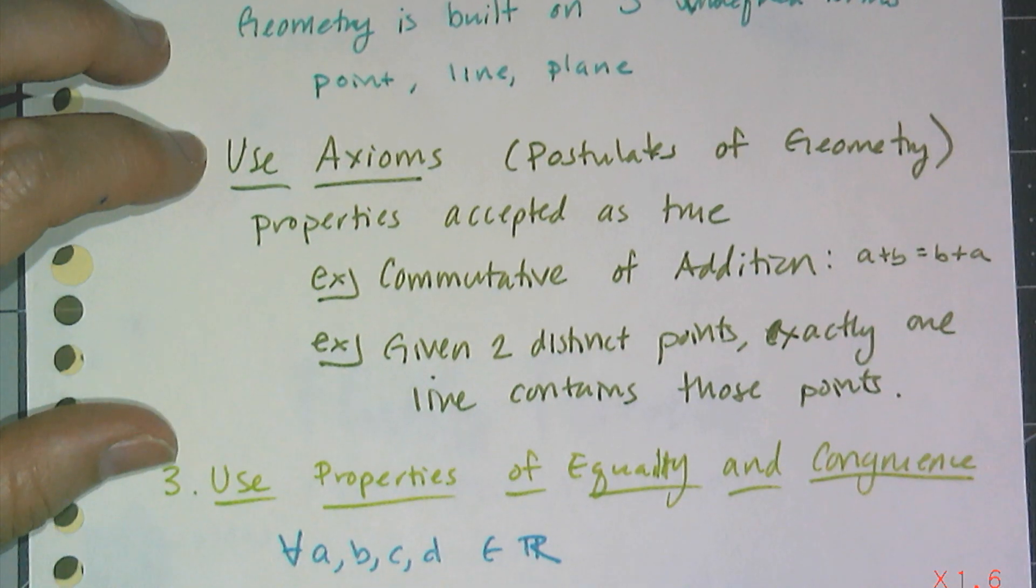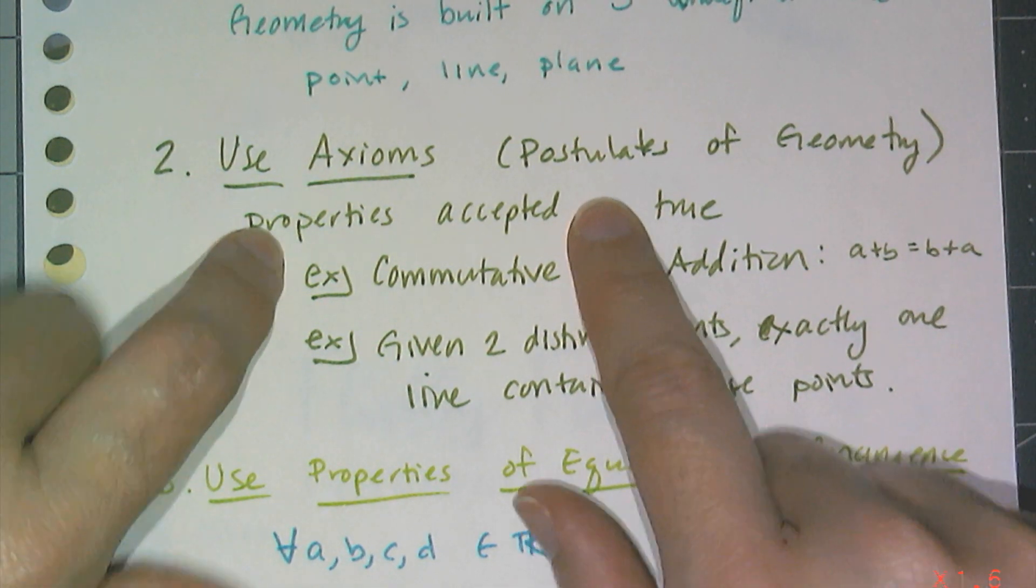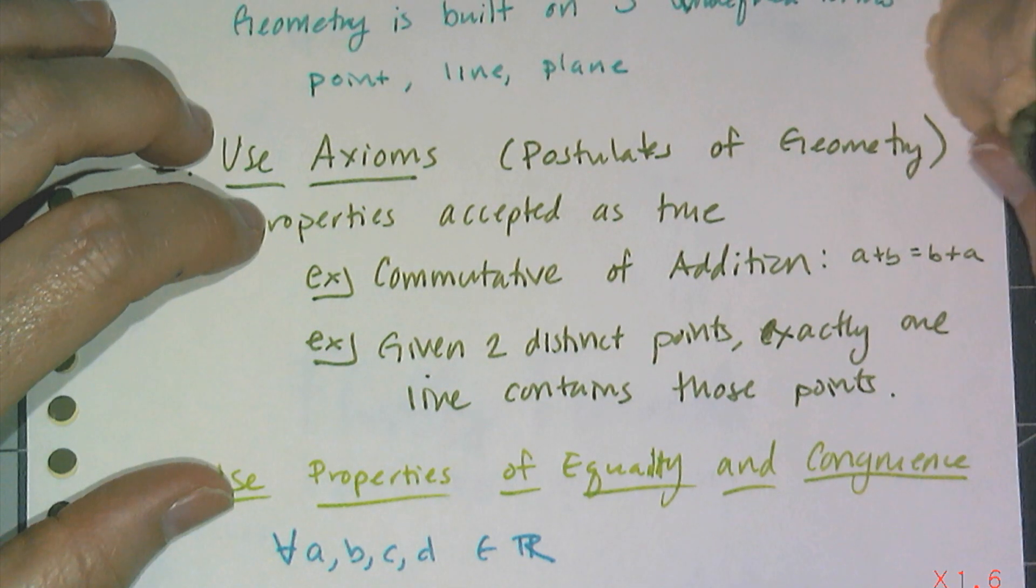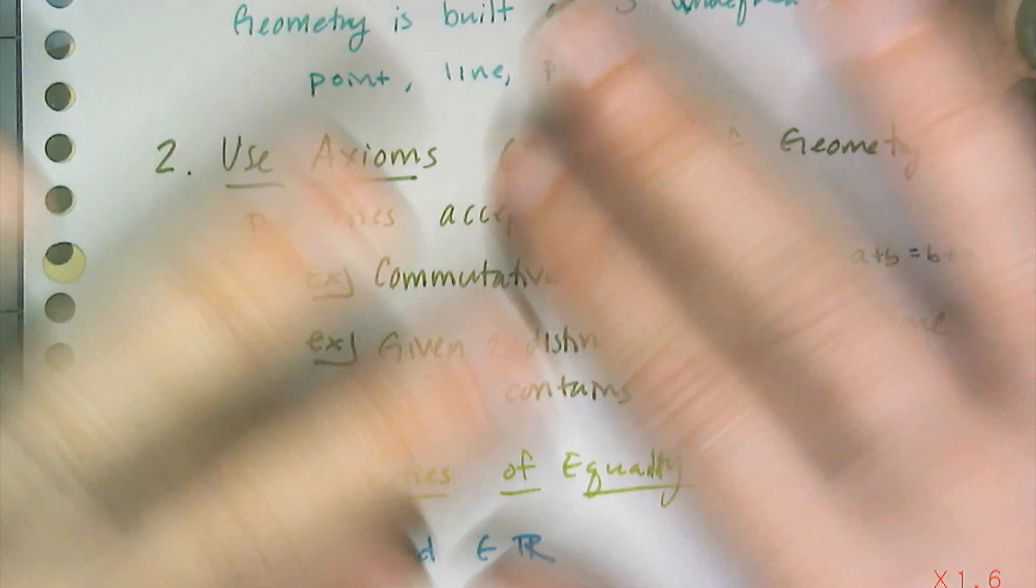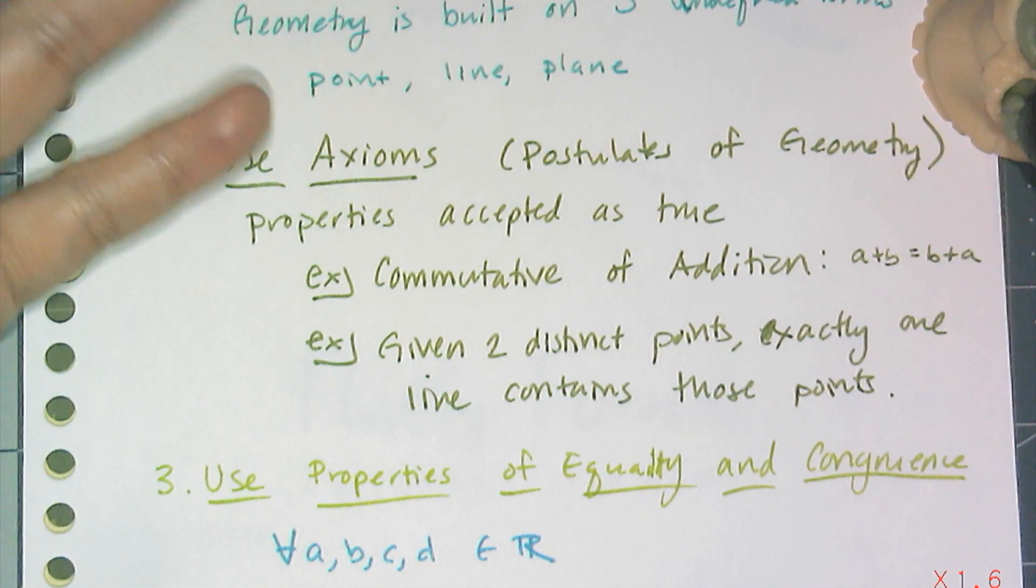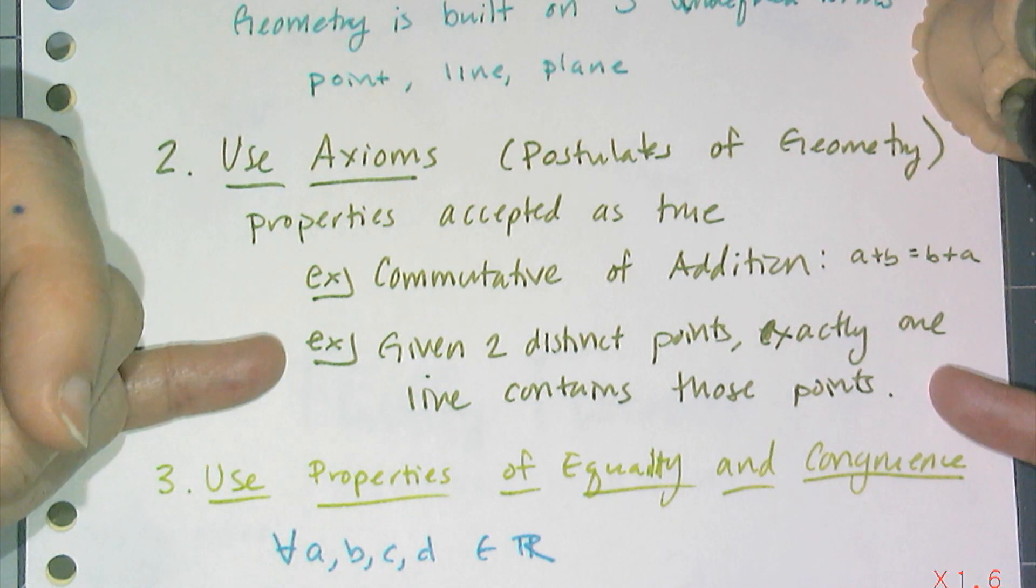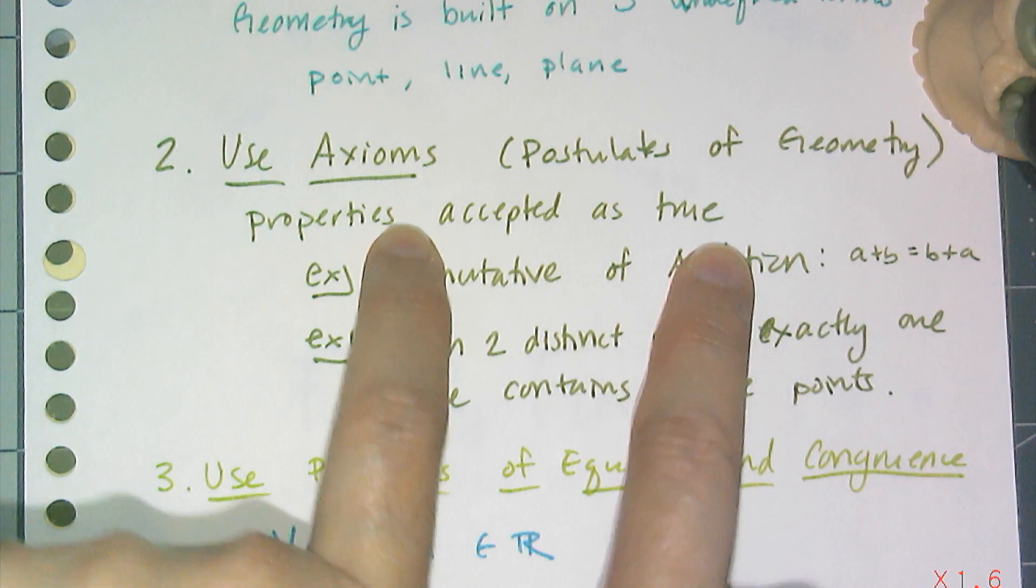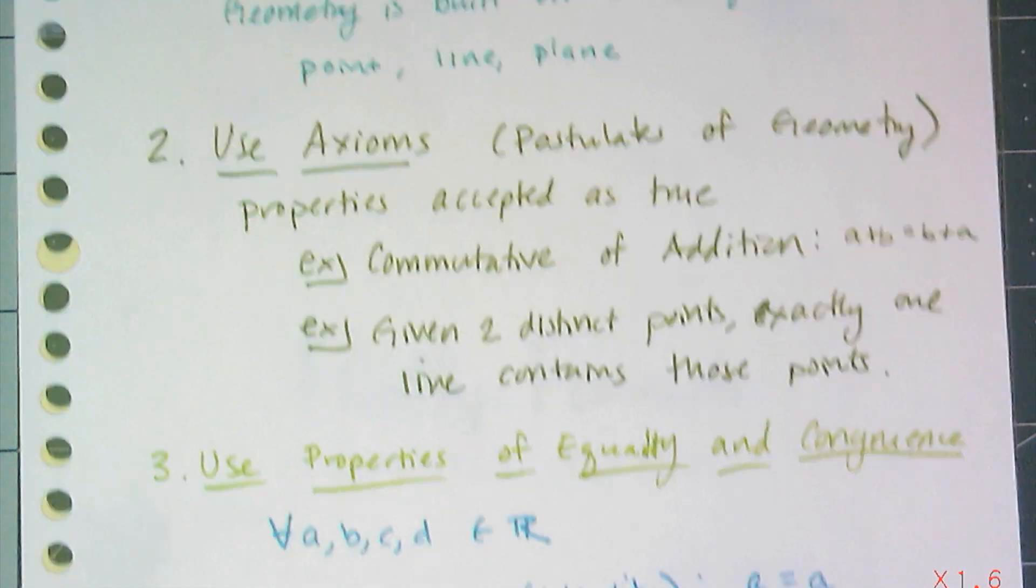Now, another thing we can use for justification is something called an axiom, also known as a postulate. And the type of geometry we study is called Euclidean geometry, because the first book that kind of codified this way of studying geometry was written by a guy named Euclid. And so he called them postulates. He had 13. And a postulate or an axiom are things that we accept as true. We just, no need to prove it. I know it's true. Like intuitively, I know it's true. So, for example, the commutative property of addition. A plus B equals B plus A. Of course, 2 plus 3 equals 3 plus 2. You don't have to prove that to me. I know that's true. That's an example of an axiom from algebra. And geometry, an example of a postulate of geometry, is that if I have two distinct points, then exactly one line can be drawn between and containing those two points. That's kind of something I kind of know is true through observation. I can't prove it. I just kind of know it's true. So I can always use an axiom to prove things as justification in a proof.